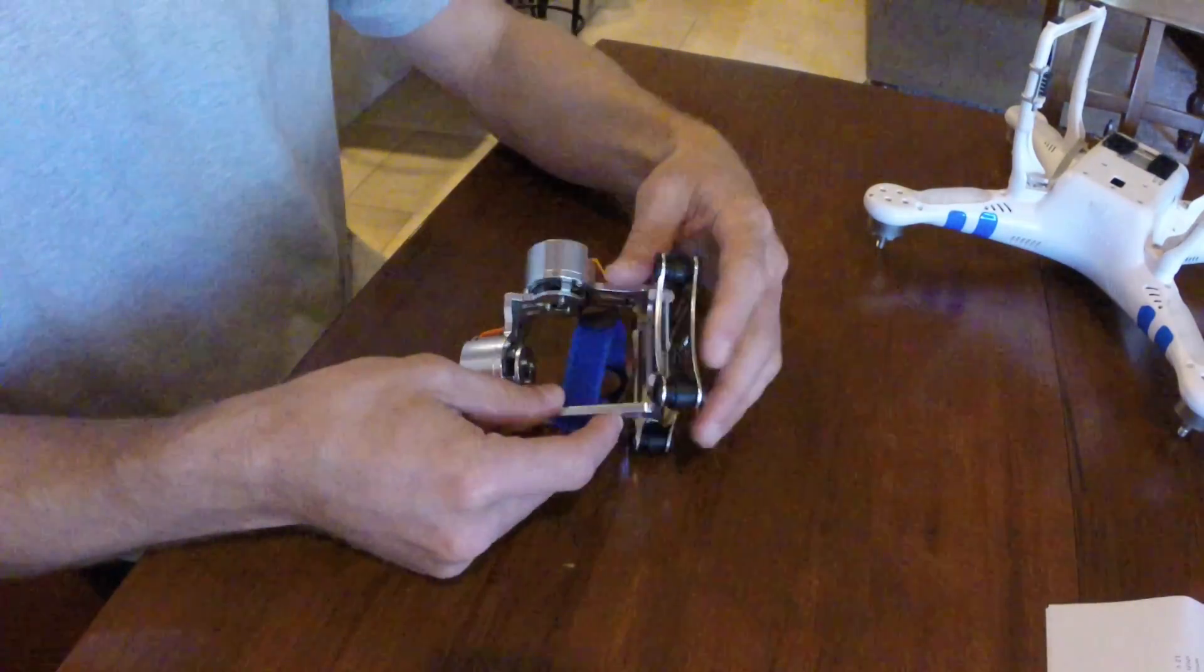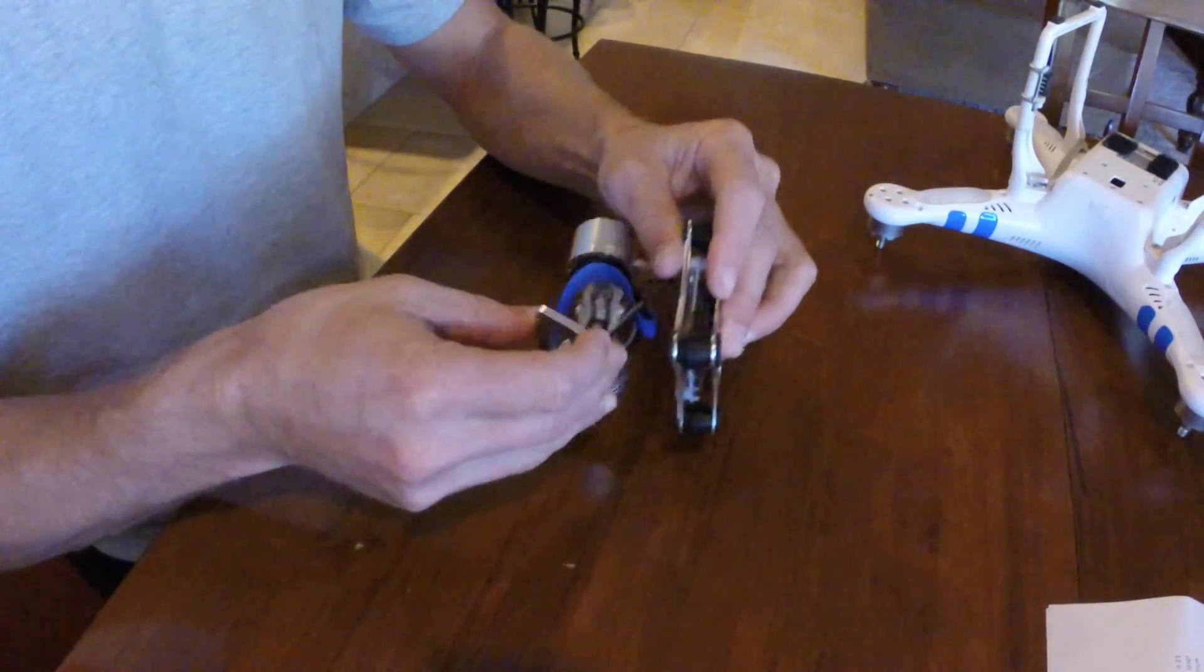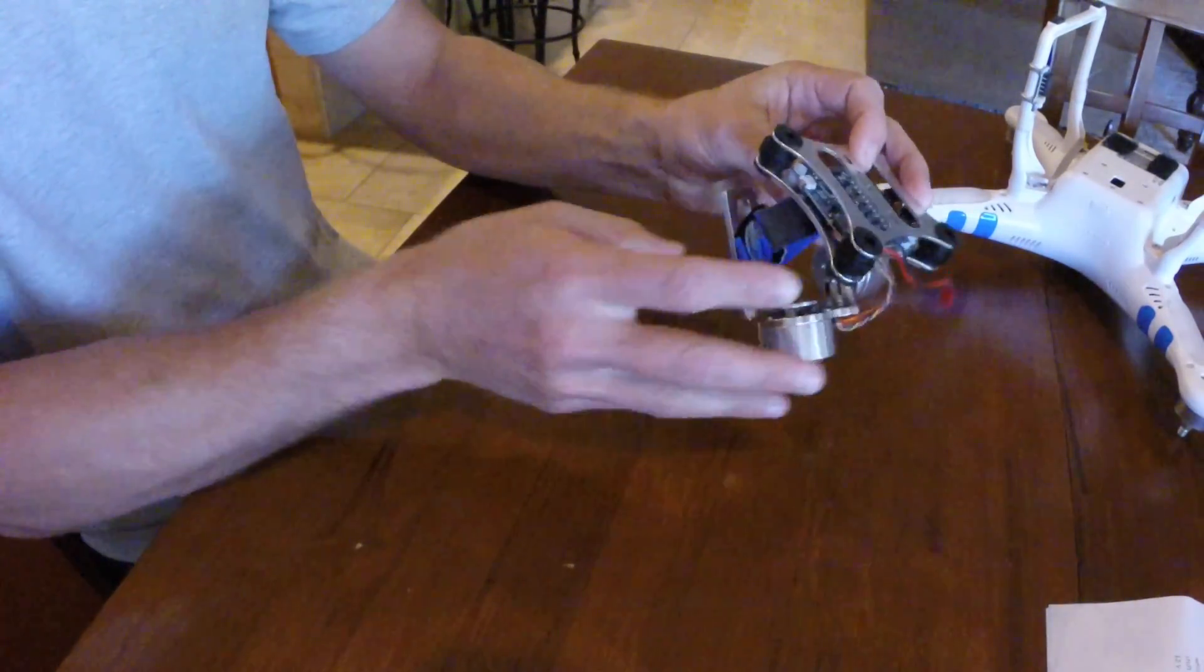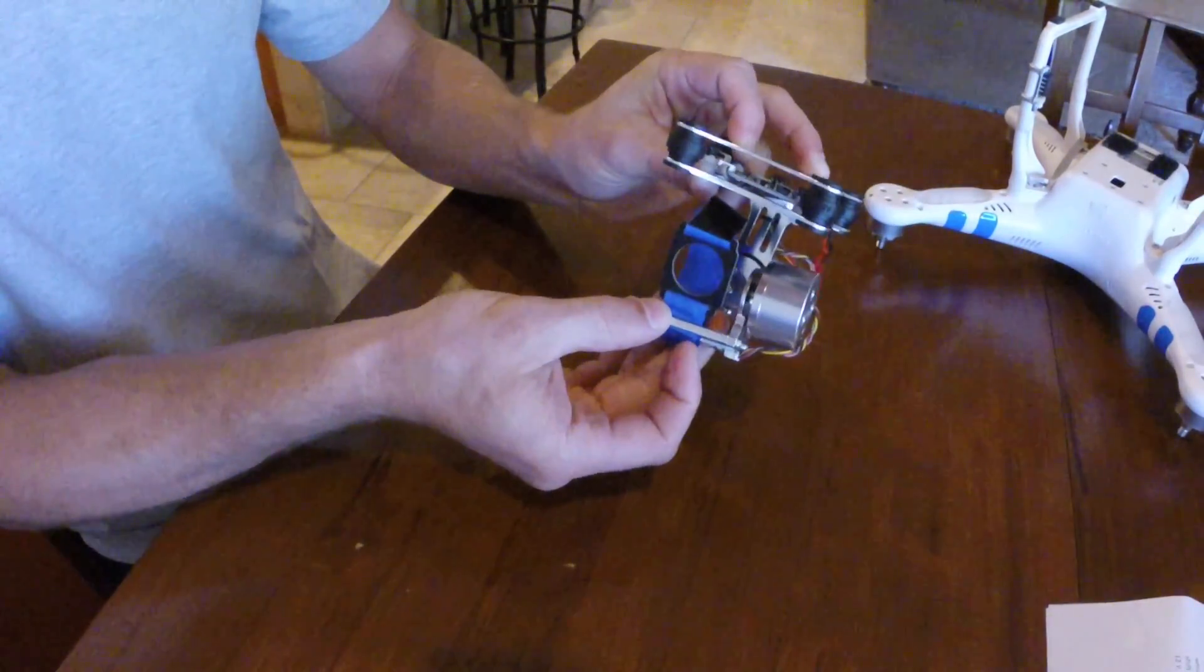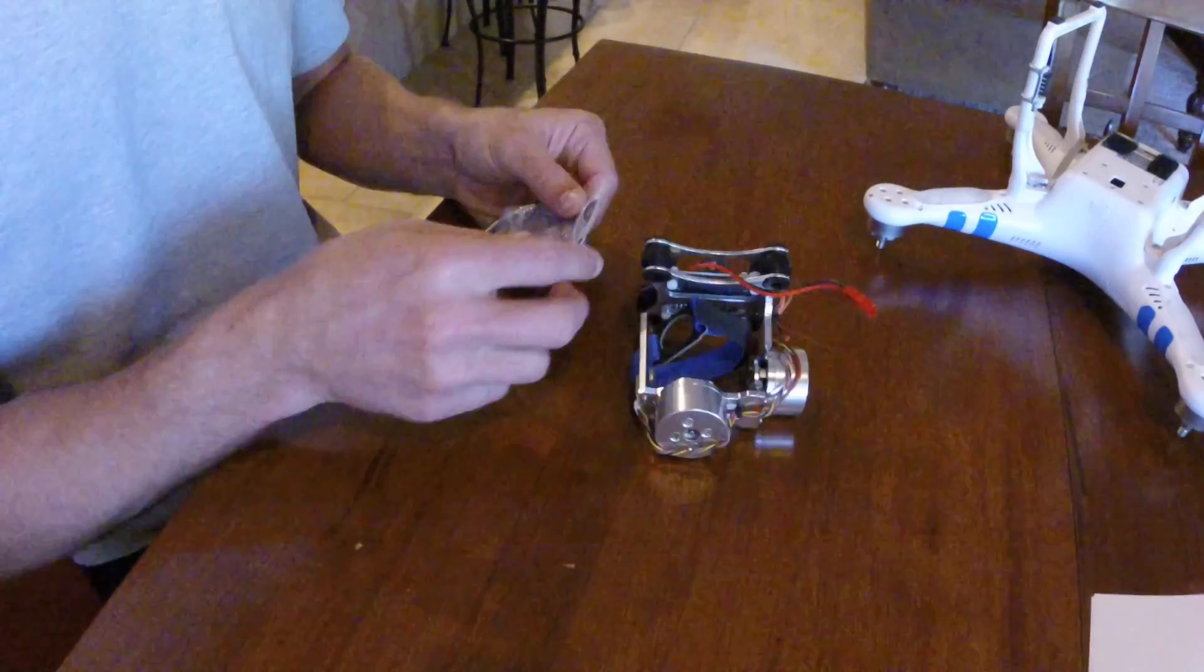As you'll see here, the rubber anti-vibration bumpers are already installed on this gimbal. Depending on the model, they'll either be installed or in a separate bag for you to install them yourself.